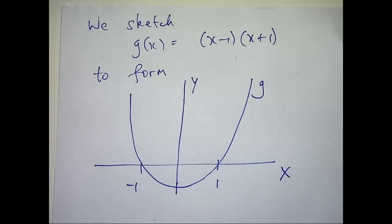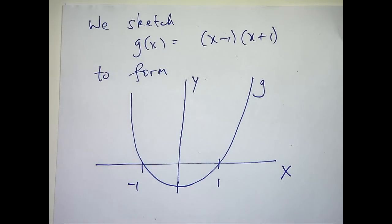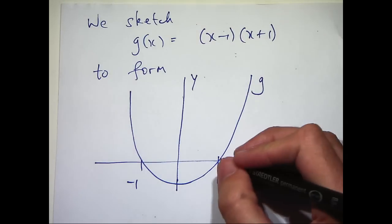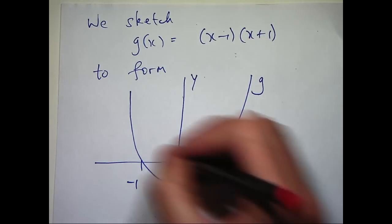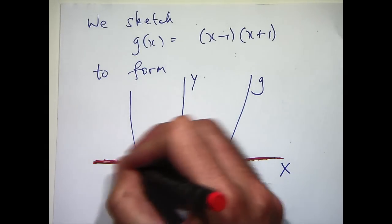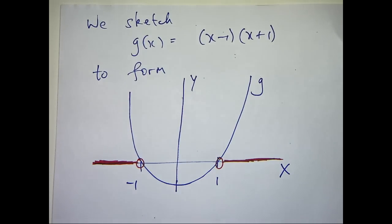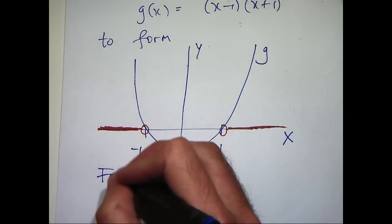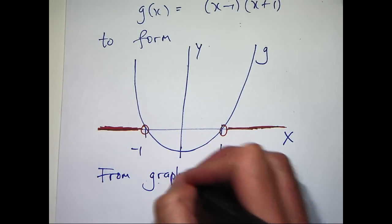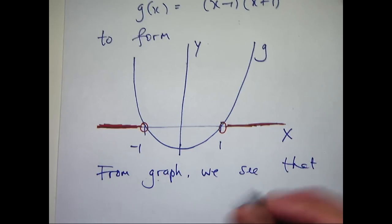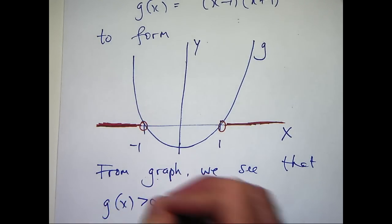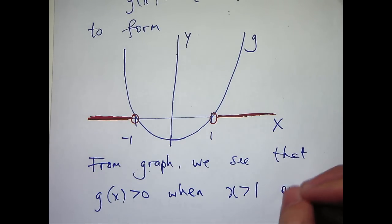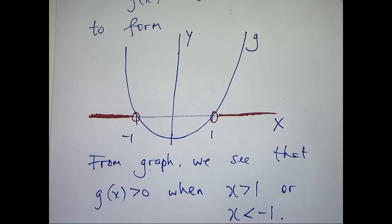Now, we want to know for what x values is this g positive, so where does it lie above the x-axis? Well, it's here and it's here and the x points corresponding to those points are here. So let's write down what those x points are.